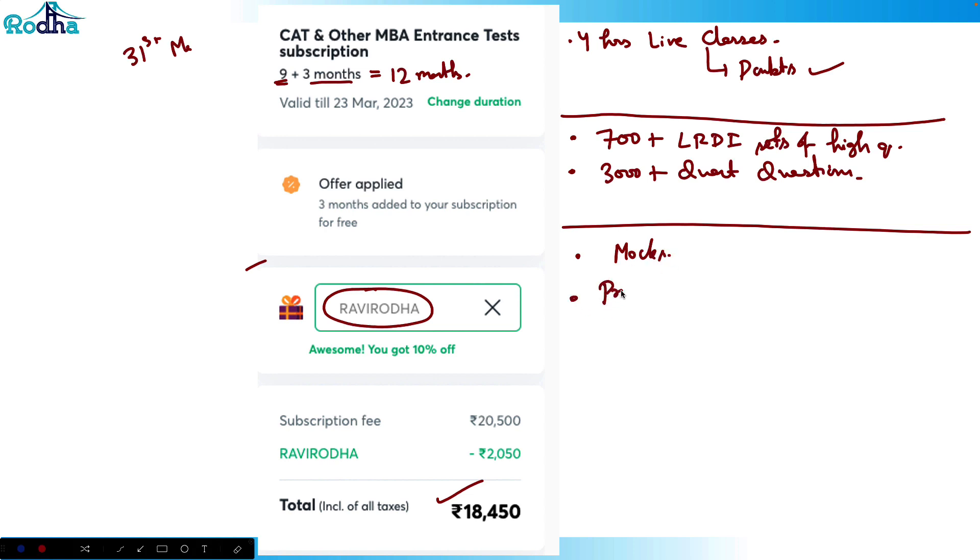Apart from this, you get all the mocks. There's a practice section—20+ mocks. In the practice section, there are some 9,000 questions in quant plus LRDI, more than 15,000 questions available.